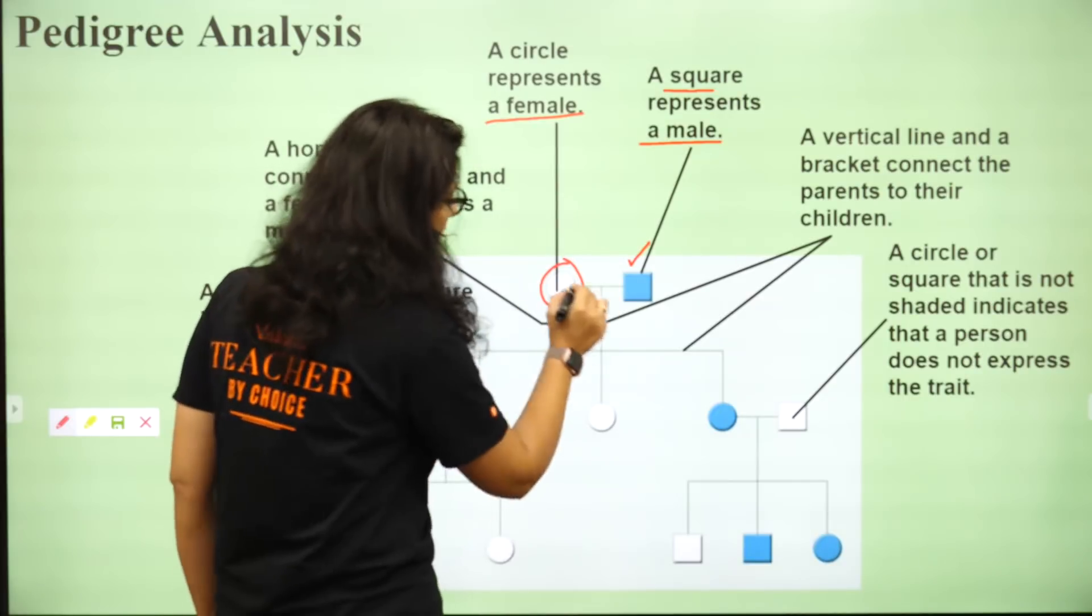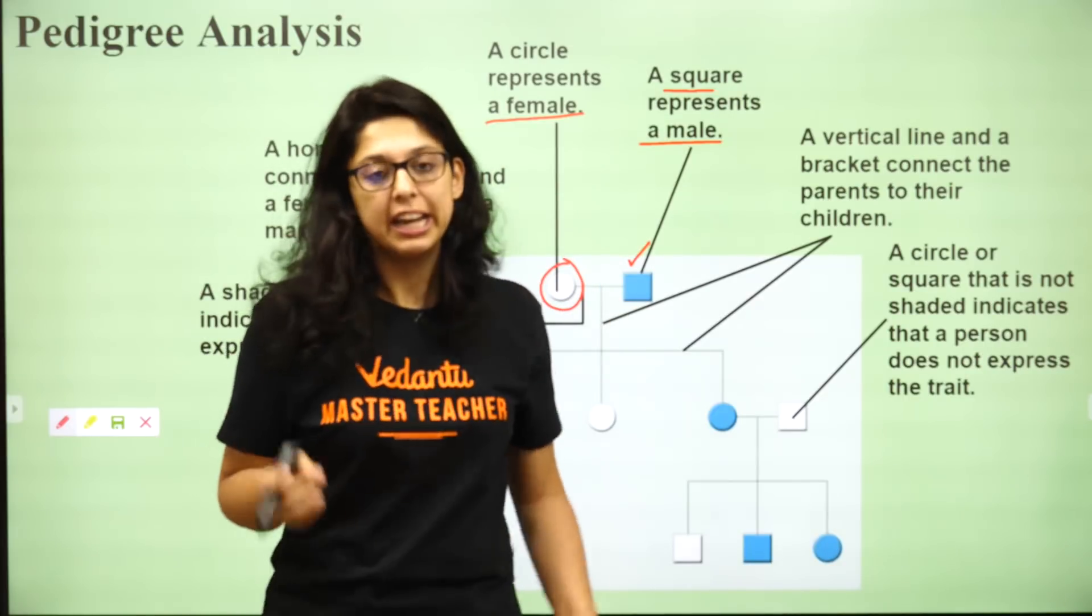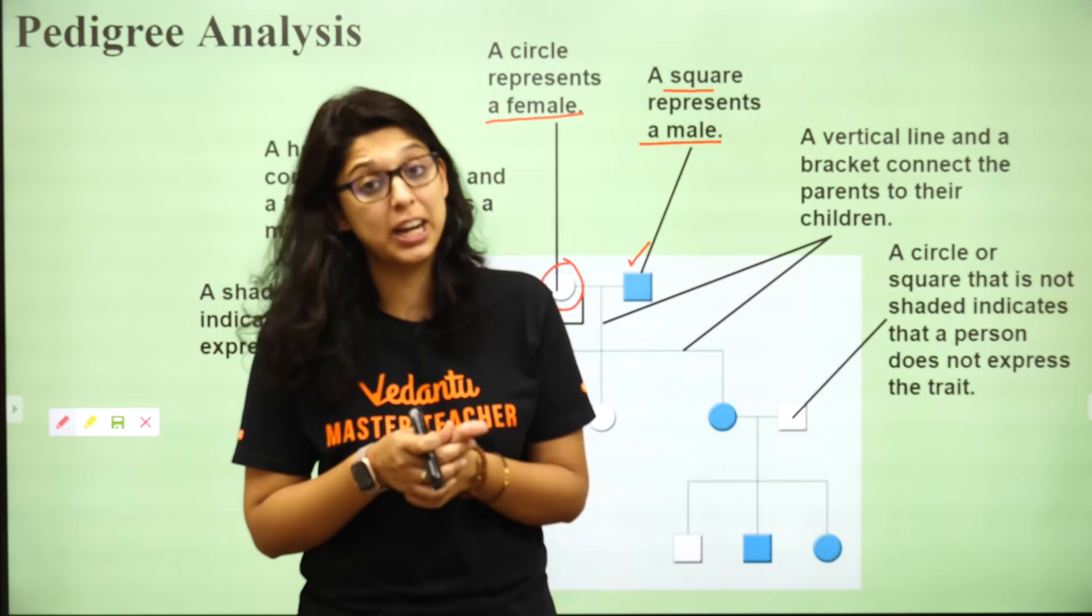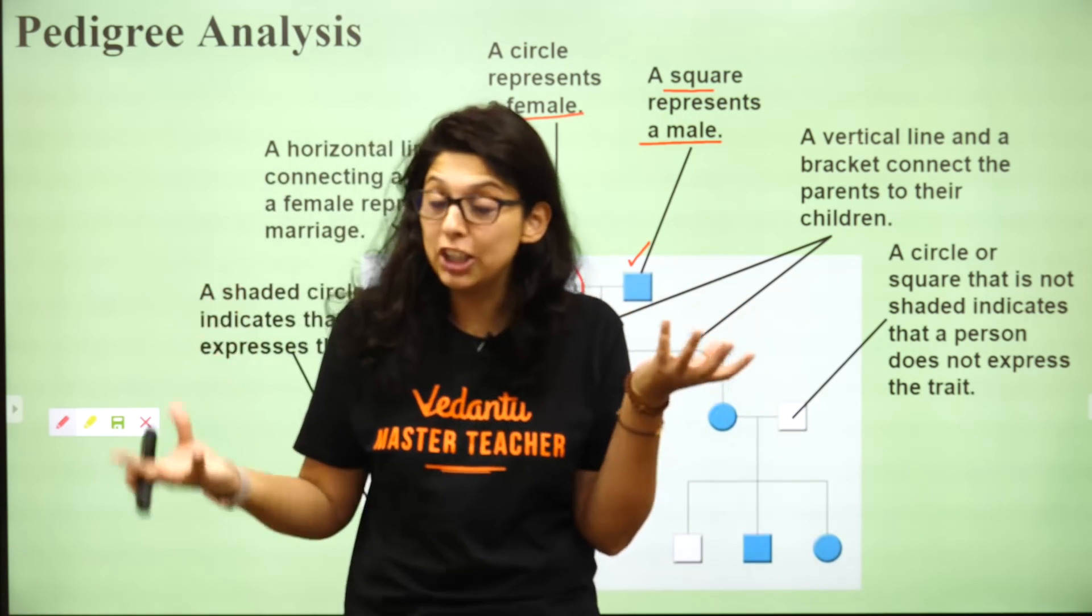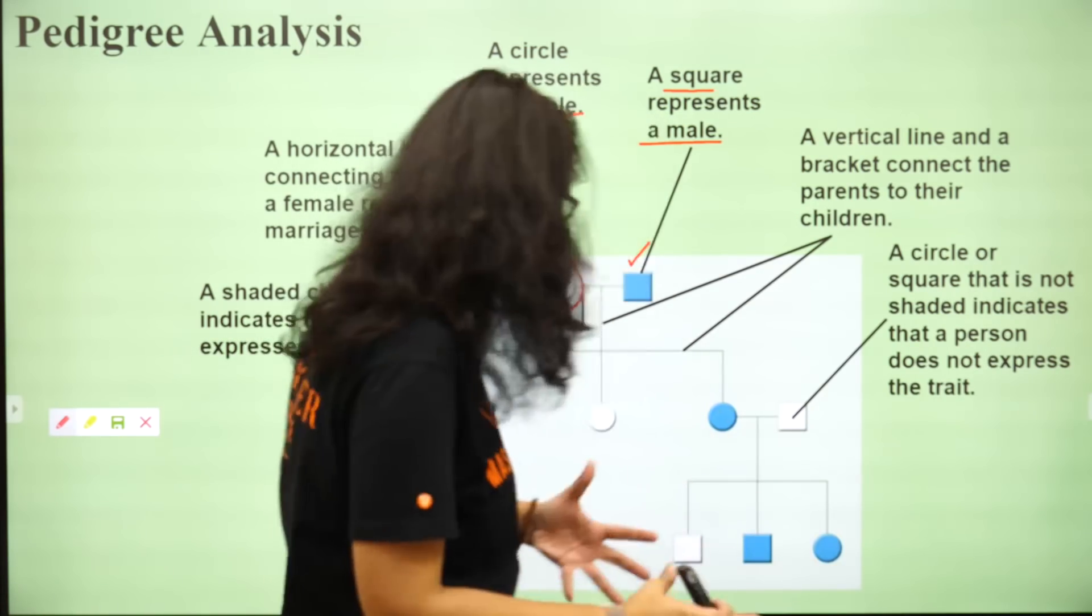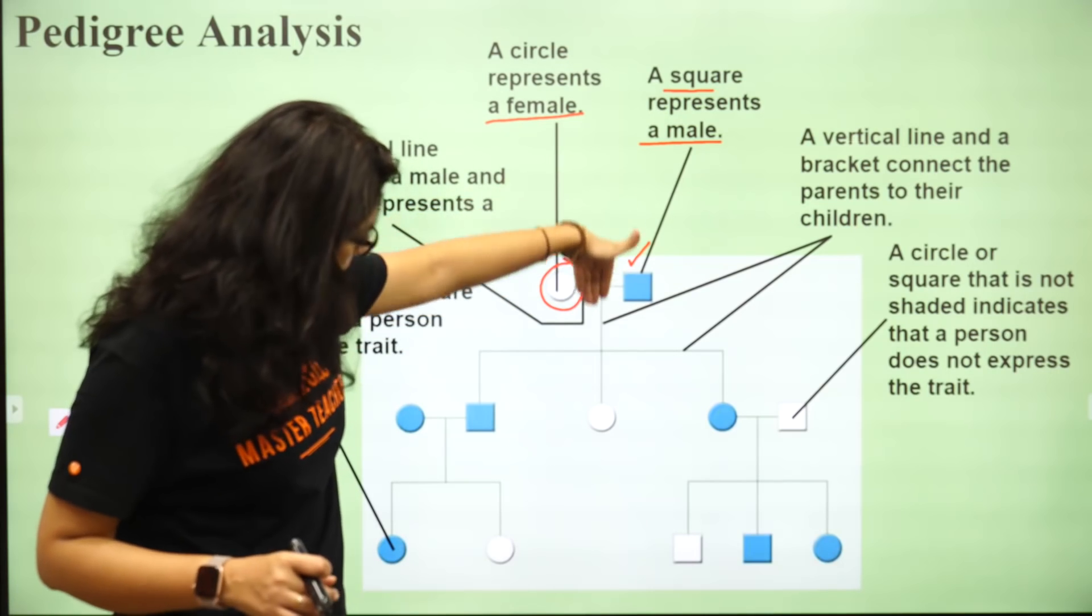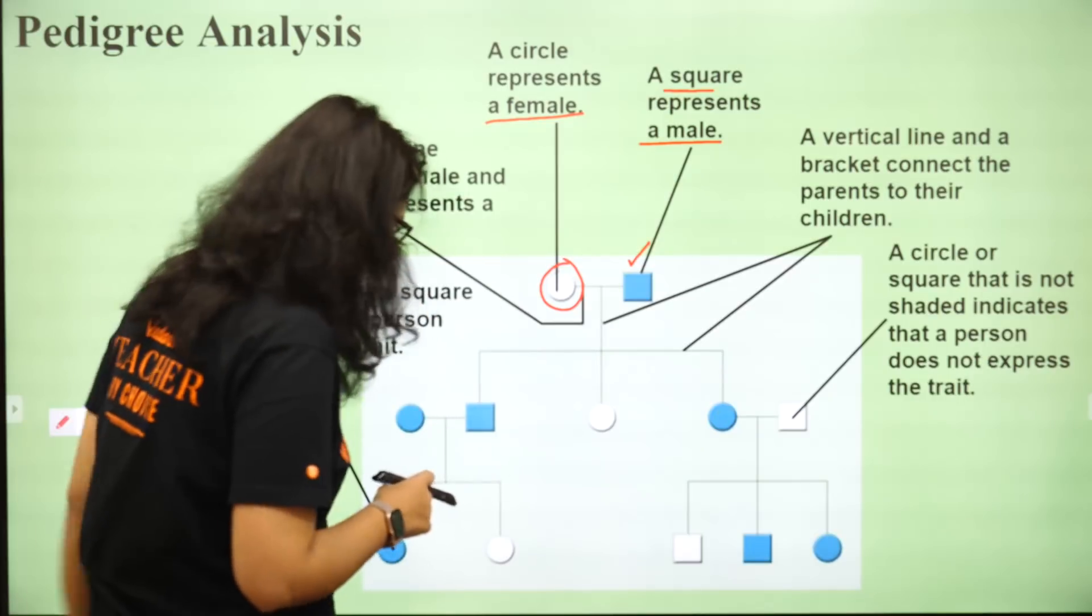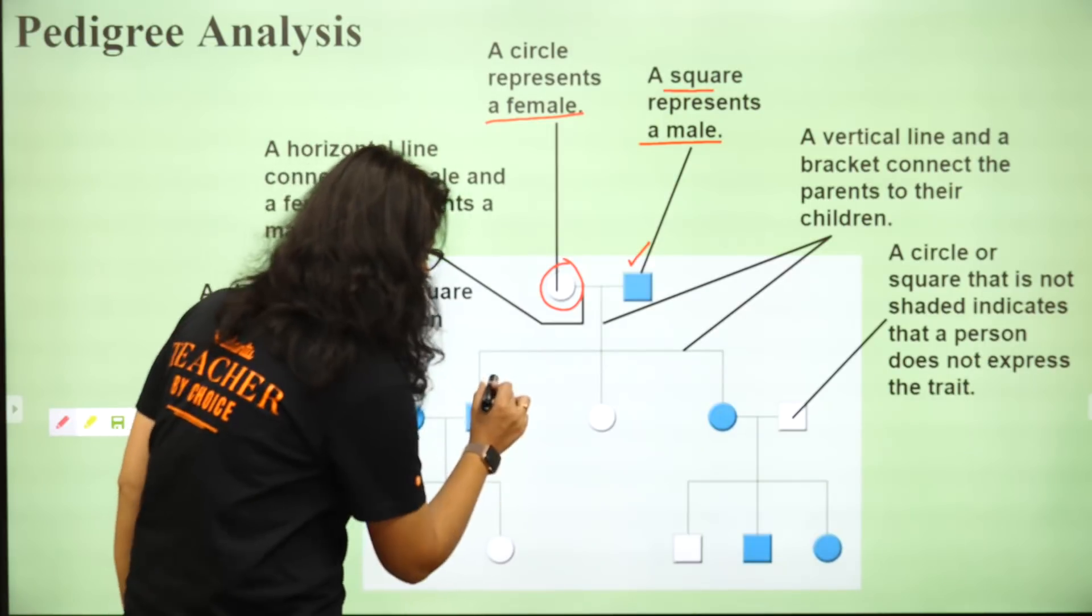If there is one arrow that represents mating or marriage. If there are two arrows like this that means it's a consanguinous marriage. That means it's a marriage between closely related individuals. Iske neeche jo hamne arrow bana, isko join karke we made this line go down, that means it's a number of offsprings. Yaha number of offsprings kitne hai? One, two and three.